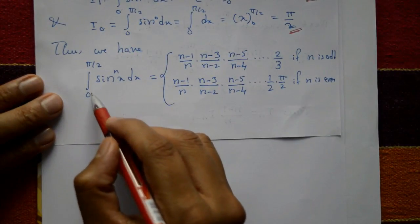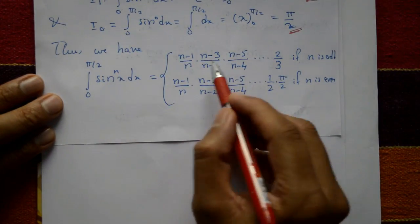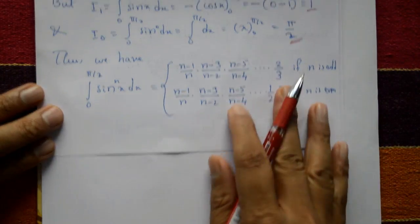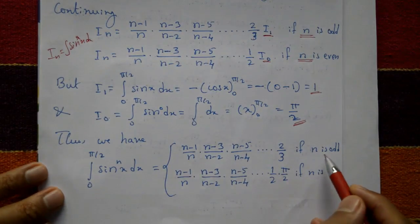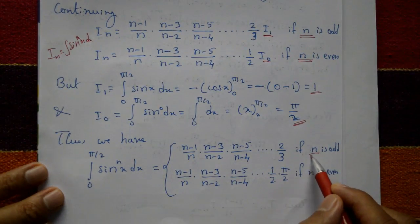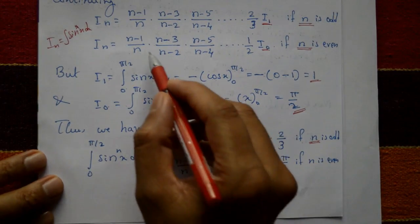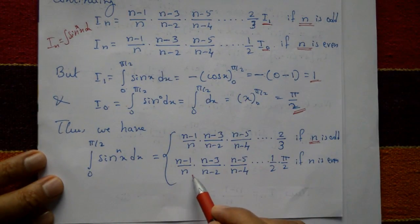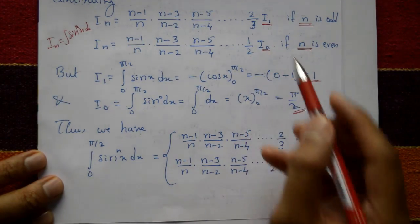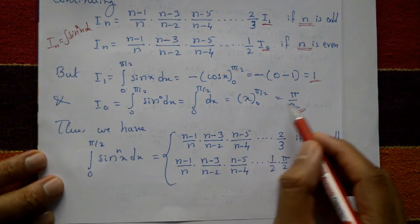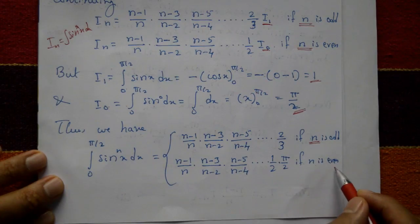Therefore: ∫₀^(π/2) sinⁿx dx = (n−1)/n · (n−3)/(n−2) · … · 2/3 · 1 if n is odd, and = (n−1)/n · (n−3)/(n−2) · … · 1/2 · π/2 if n is even.